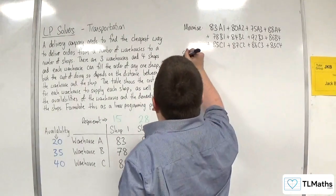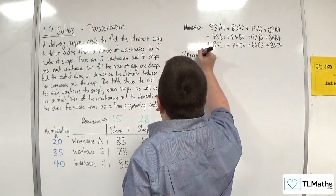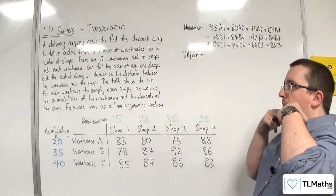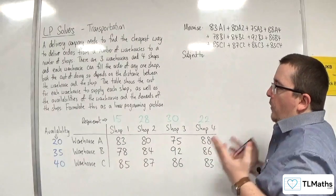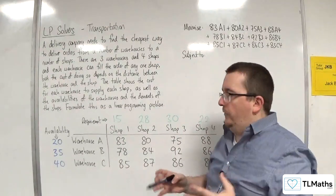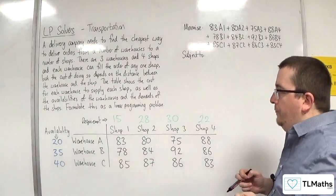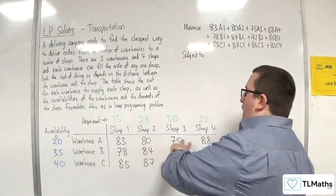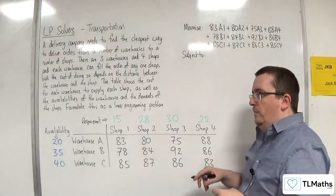Subject to constraints. Now let's focus on warehouse A to start off with. Warehouse A is to supply each of shop one, shop two, shop three, or shop four.